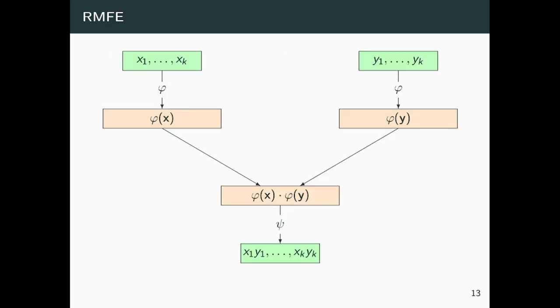Let me explain now how the RMFE relates the multiplicative structure of the two objects we are dealing with. Essentially, what we want to do is, given the encoding of two vectors x and y, we want to retrieve the entrywise multiplication of these vectors. In order to do so, the RMFE allows us to multiply the two encodings that we have, and in order to retrieve the entrywise multiplication of the bits, we can simply apply the map ψ.